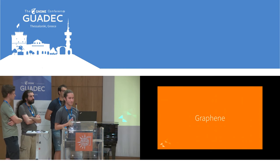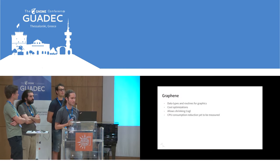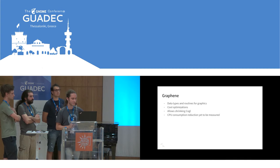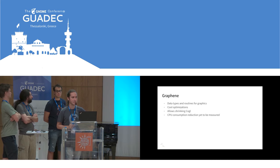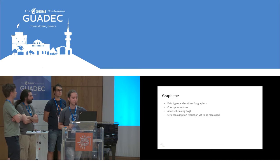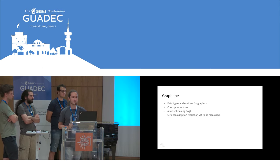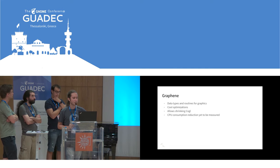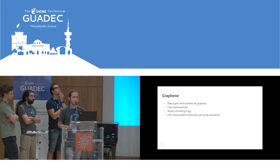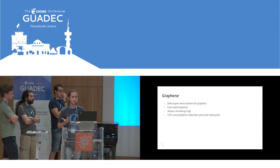Also on the list is Graphene, targeted for GNOME 3.36. Graphene has some cool optimizations. It's going to affect GNOME Shell quite a lot because we do a lot of matrix calculations, and Graphene is pretty good at those. It should be a considerable improvement, especially on the CPU side of things.